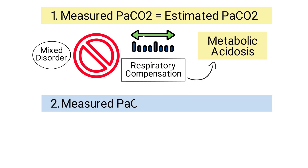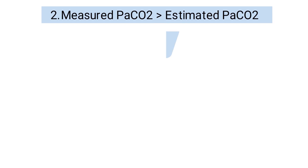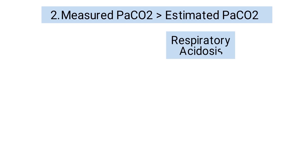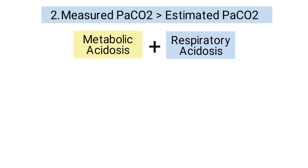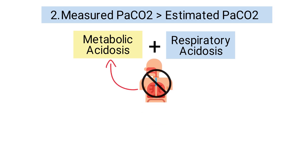When the measured PaCO2 is greater than the estimated value, it indicates that the patient has respiratory acidosis in addition to metabolic acidosis. This is because the patient's respiratory system is not compensating enough for metabolic acidosis, resulting in an increased PaCO2.